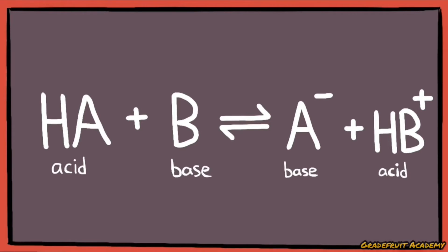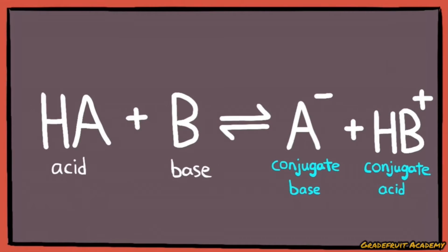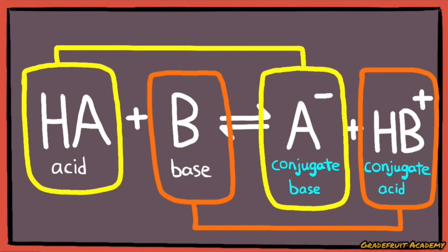But to be more precise, A- is the conjugate base of the HA acid while the HB+ is the conjugate acid of the B base. Hence, forming two conjugate acid-base pairs.